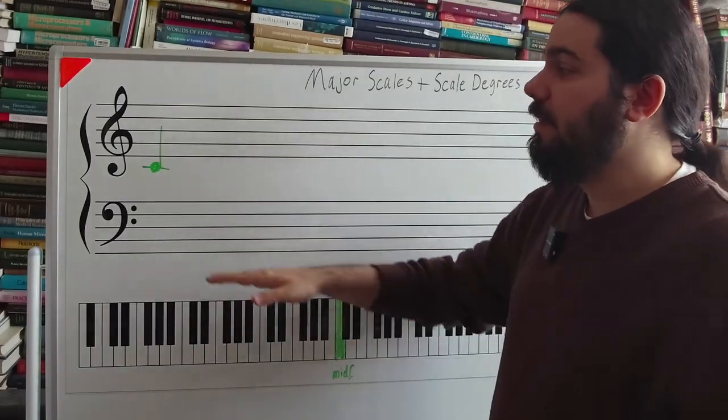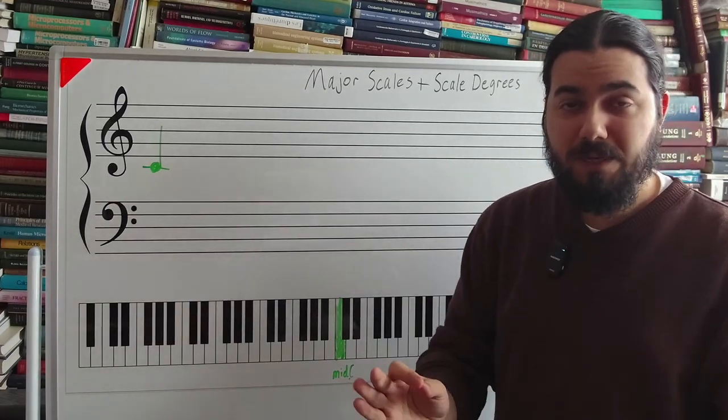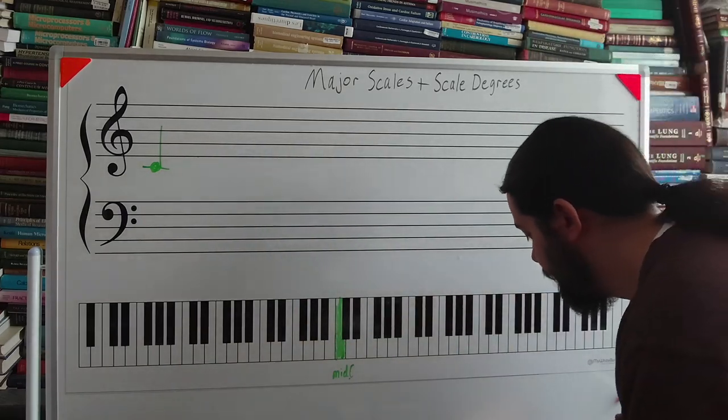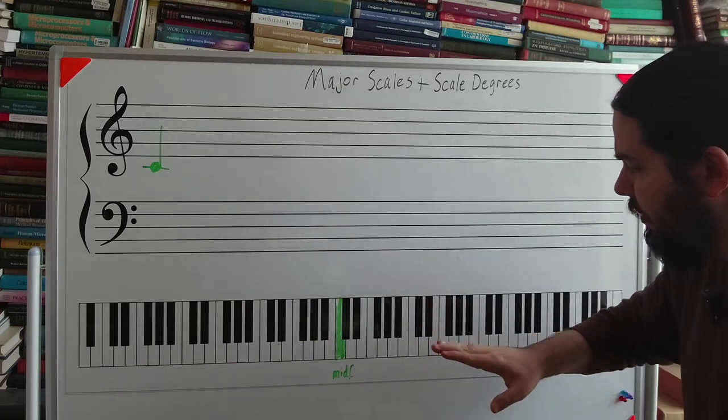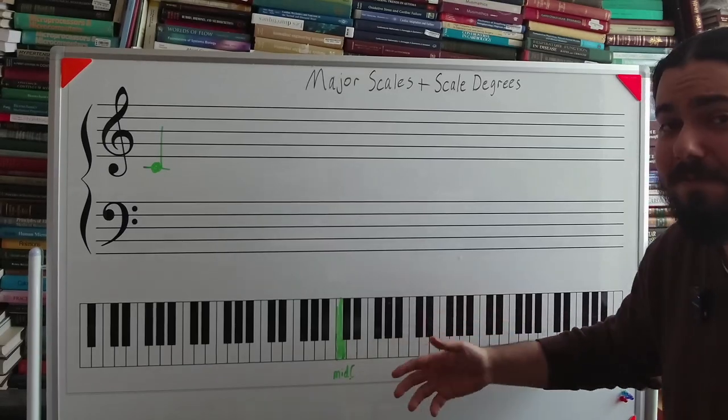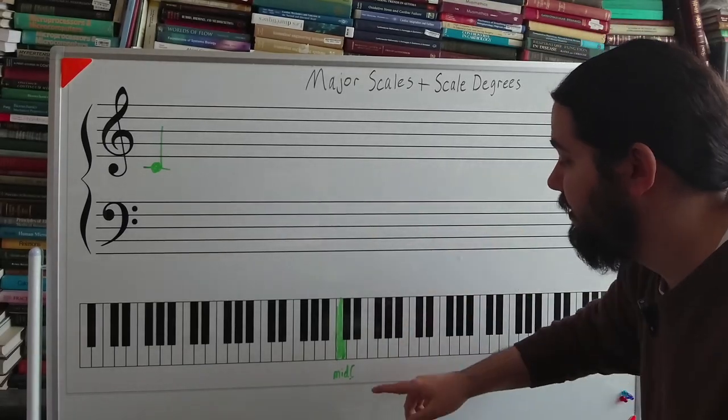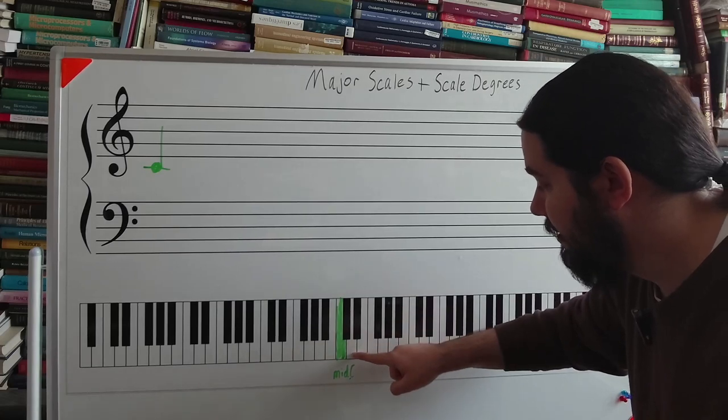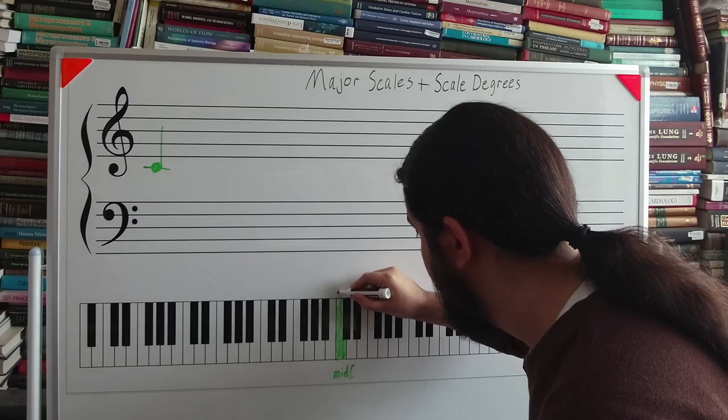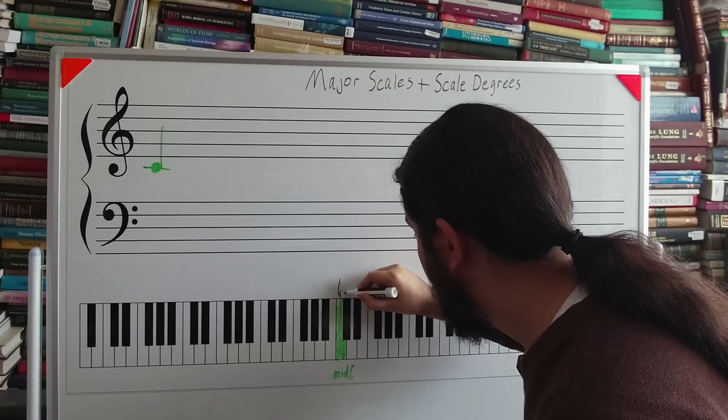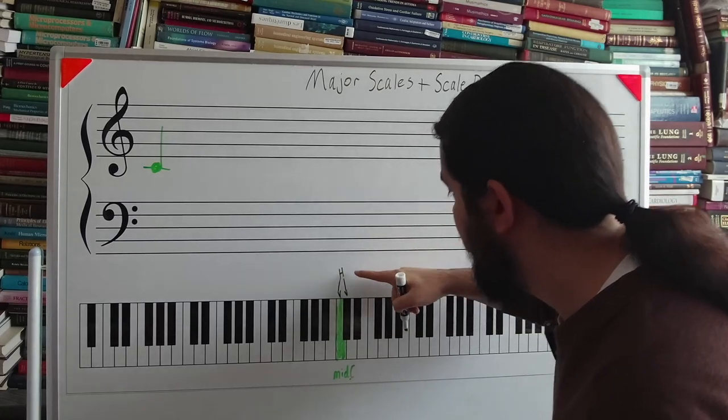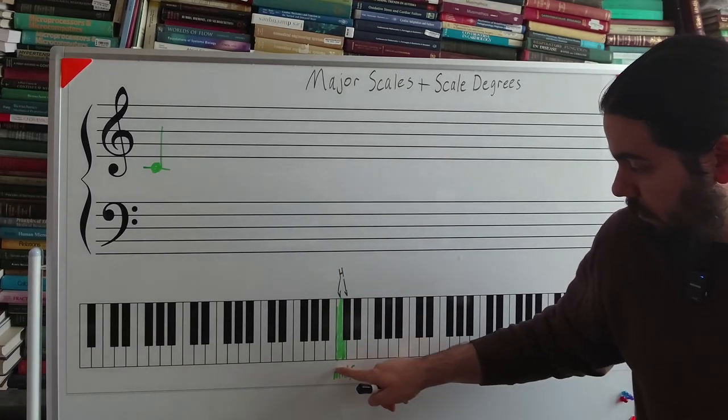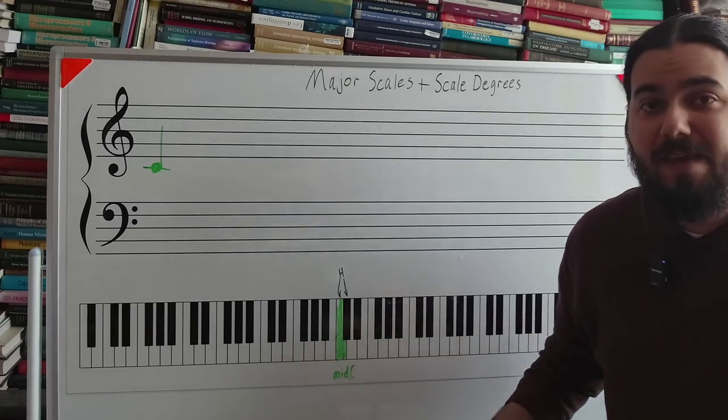We are going to build a major scale based on C, but before we do that I need to briefly discuss what half steps and whole steps are. Going back to the piano keyboard, you notice that there are white keys and black keys obviously. The distance between one key and the key that it's immediately next to, which is this C sharp not this D, that is a half step. So the distance from C to C sharp, that is a half step.